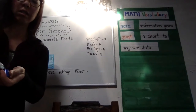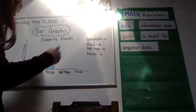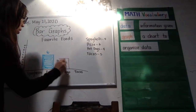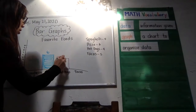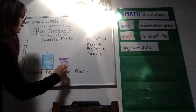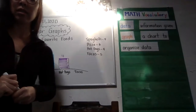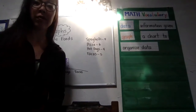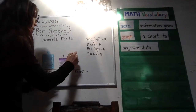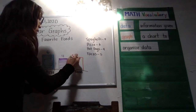Now let's look at hot dogs. How many people voted for hot dogs? Four people. So I'm going to find that number four again and draw a bar above hot dogs to show that four people voted for hot dogs. I'm going to put the number right on top, just to make it easy to see. And then how many people voted for tacos? Five people. So I'm going to find the number five on my chart and color it in.